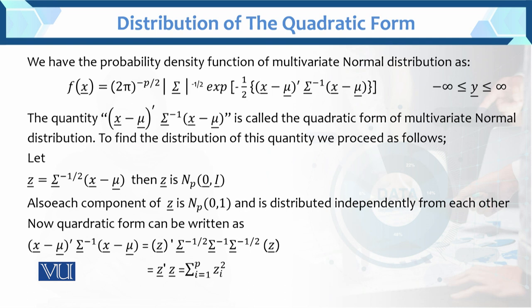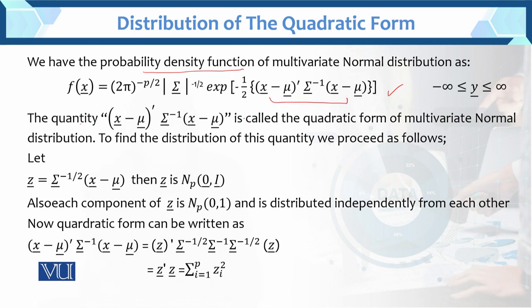We have the probability density function of multivariate normal. We know this is the probability distribution function of normal. This quantity is called the quadratic form of the multivariate normal distribution.